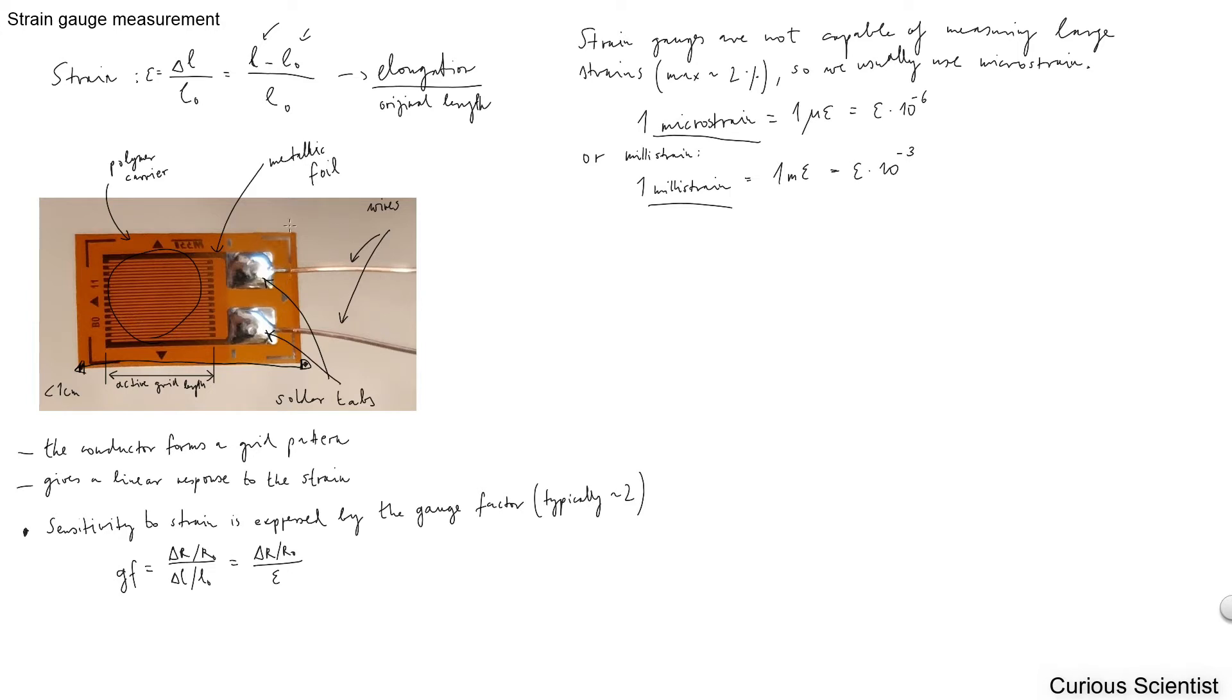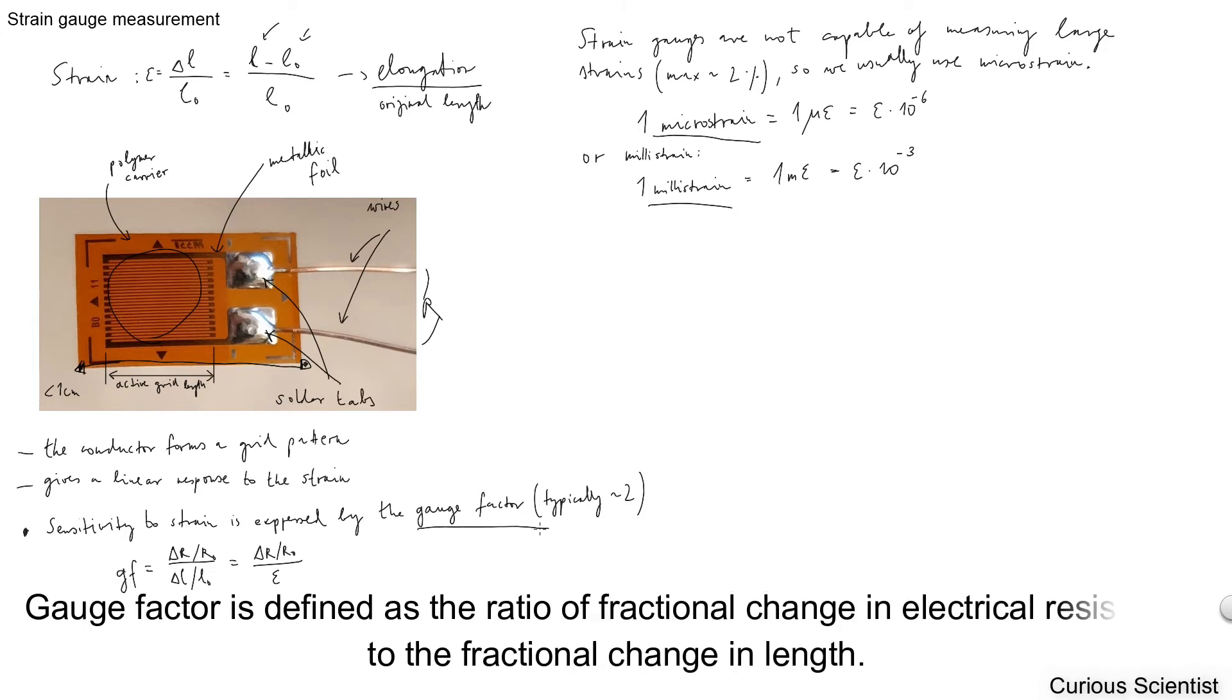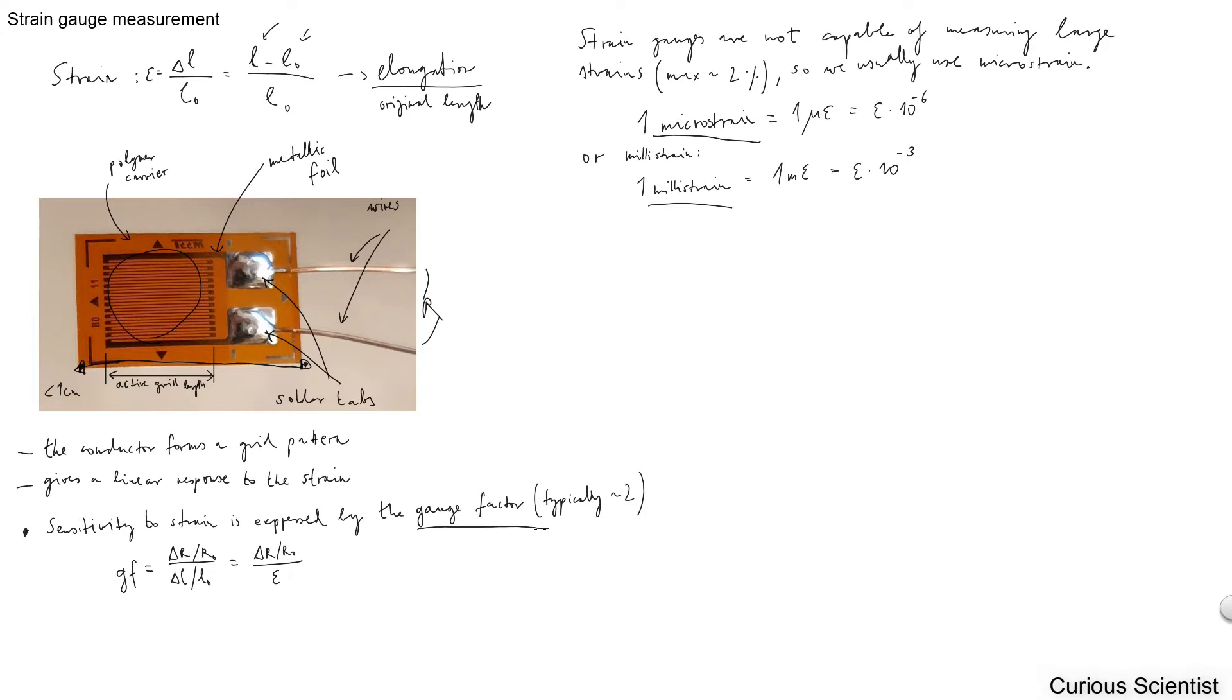When we use these devices we have to consider two things. We have to measure the resistance between the two terminals, and we have to know what is the gauge factor. The gauge factor is typically around two. It is always provided by the manufacturer. If you buy it from some good place, they give you the exact number up to maybe two digits precision, like 2.08 or 1.97.